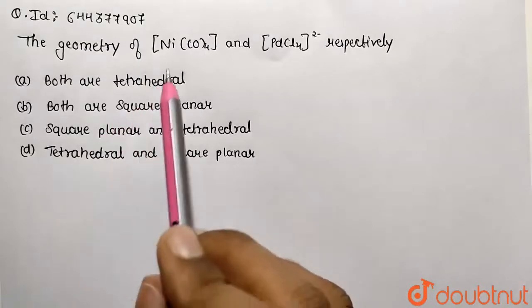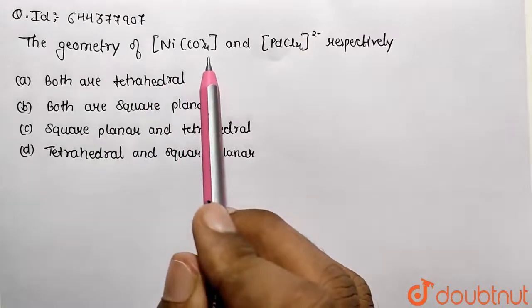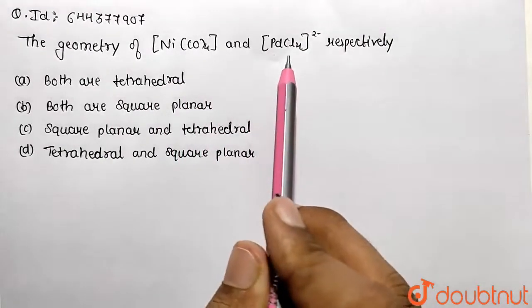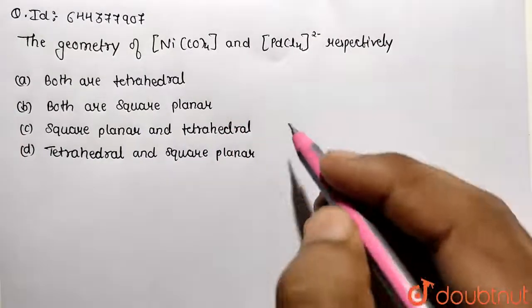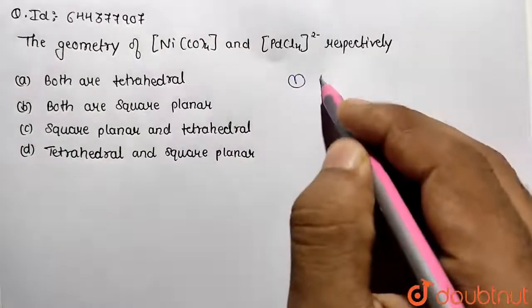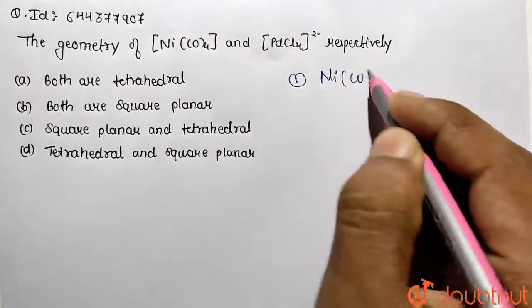In this question, we are asked about the geometry of Ni(CO)₄ and PdCl₄²⁻. We need to find their respective geometries. First, consider the given complex Ni(CO)₄.